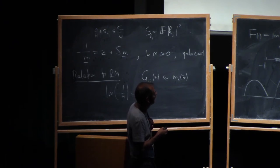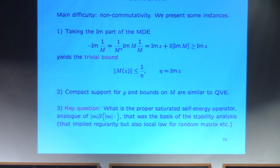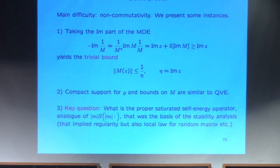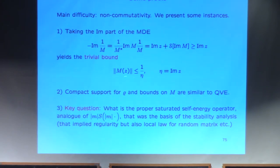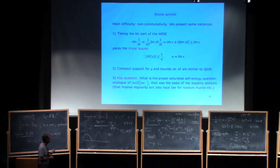This is one way of doing it. On one side you take the imaginary part, and on the other side the imaginary part goes through the S operator as a linear operator. If you start studying this equation, you can try to deduce similar bounds as before. The cheapest bound you get immediately: since S is a positivity-preserving operator and the imaginary part of M is positive, you can neglect that term as a lower bound, and then you get that the imaginary part of 1 over M is bigger than the imaginary part of Z. Inverting that relation yields at least the trivial bound that M is bounded by 1 over eta — the same bound as in the vector case.